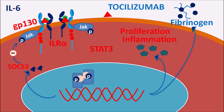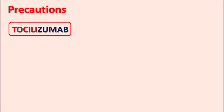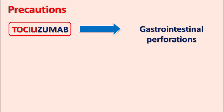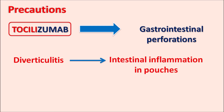Now let us see the precautions of tocilizumab. One important precaution is that this drug can produce gastrointestinal perforations. Because of these perforations, diverticulitis — intestinal inflammation in the form of pouches — can be observed in patients treated with tocilizumab. Similarly, gastritis, the inflammation of the gastric mucosa, can also occur. Care should be taken in patients who already have any gastric inflammation.